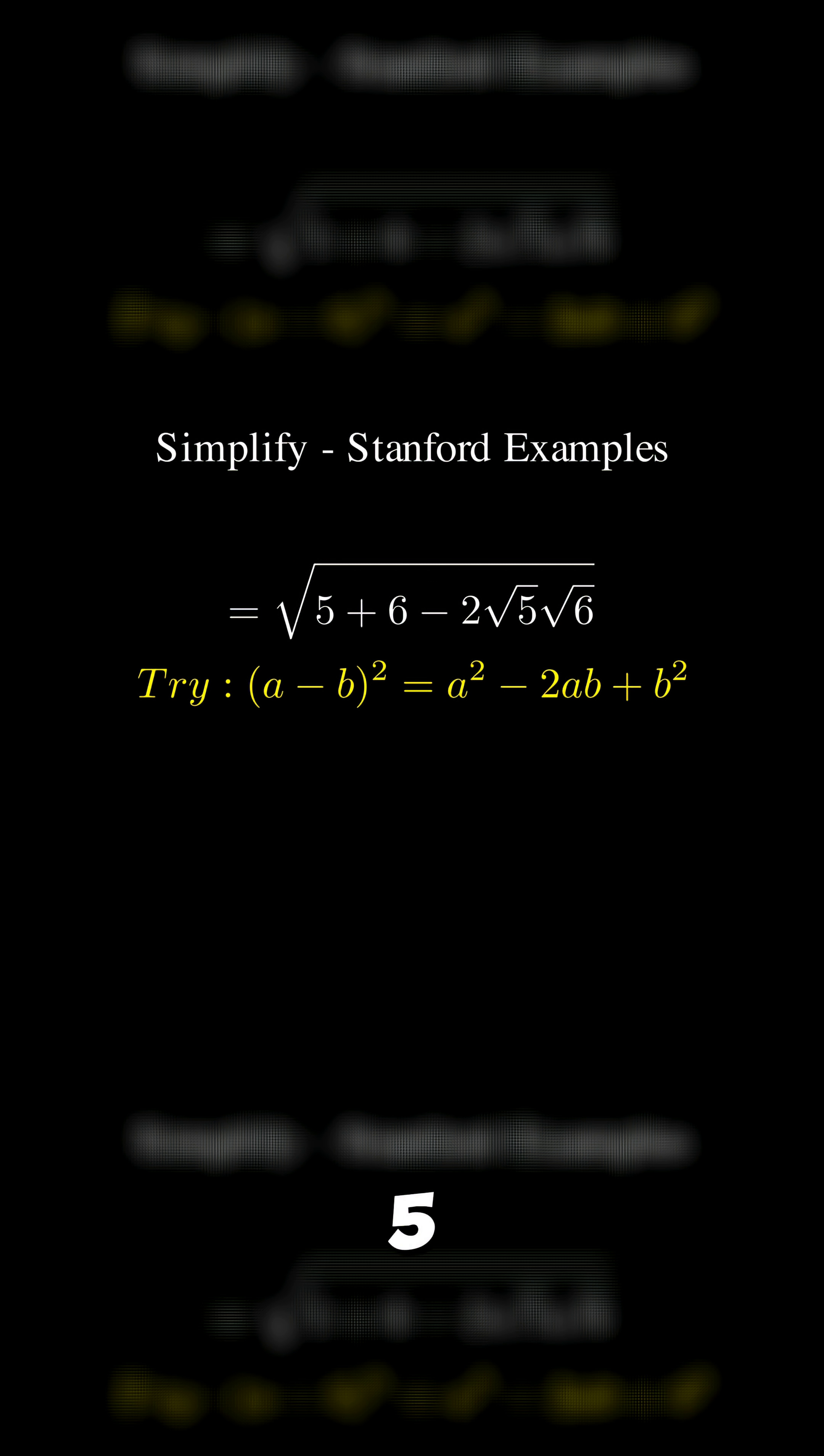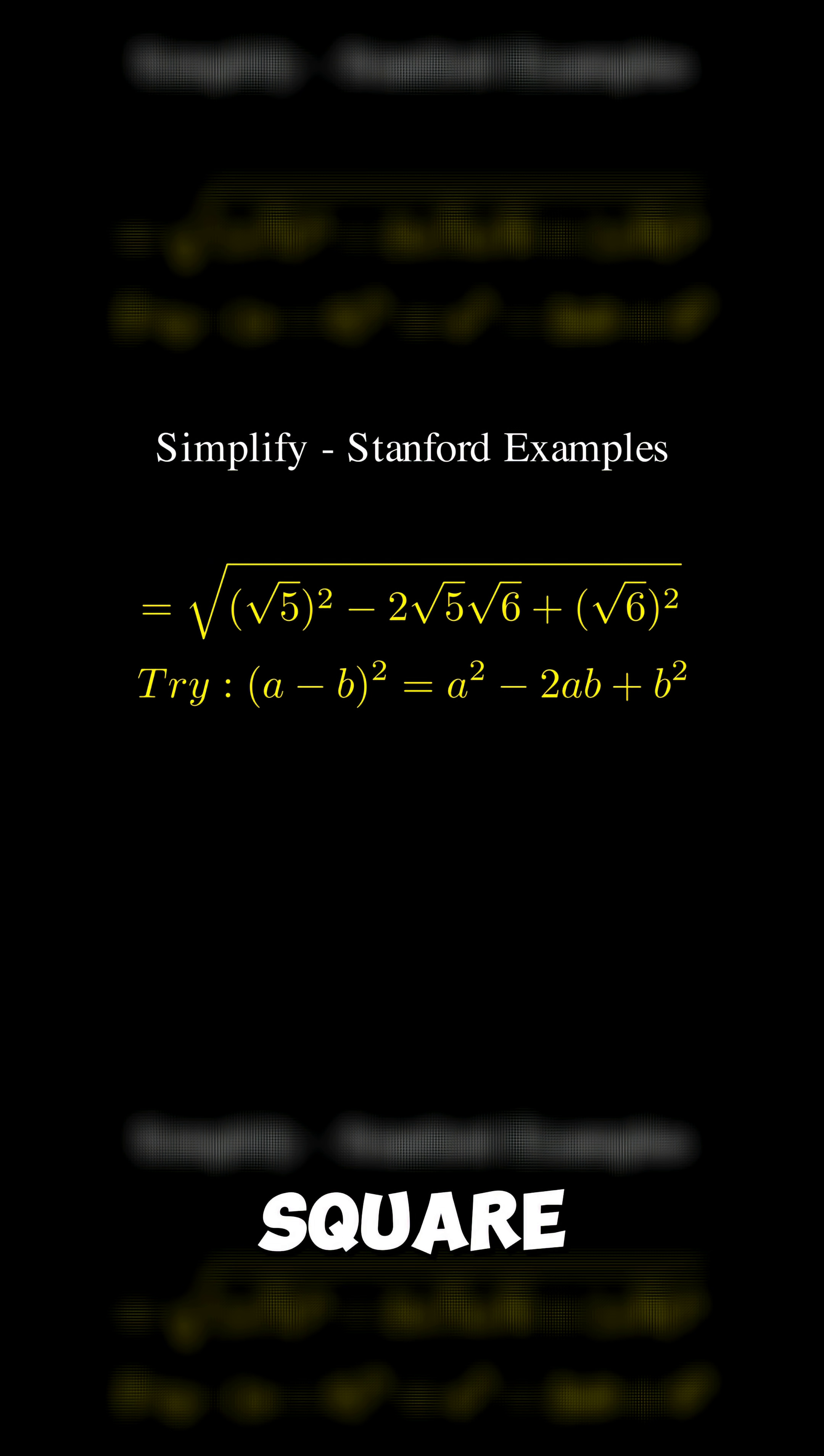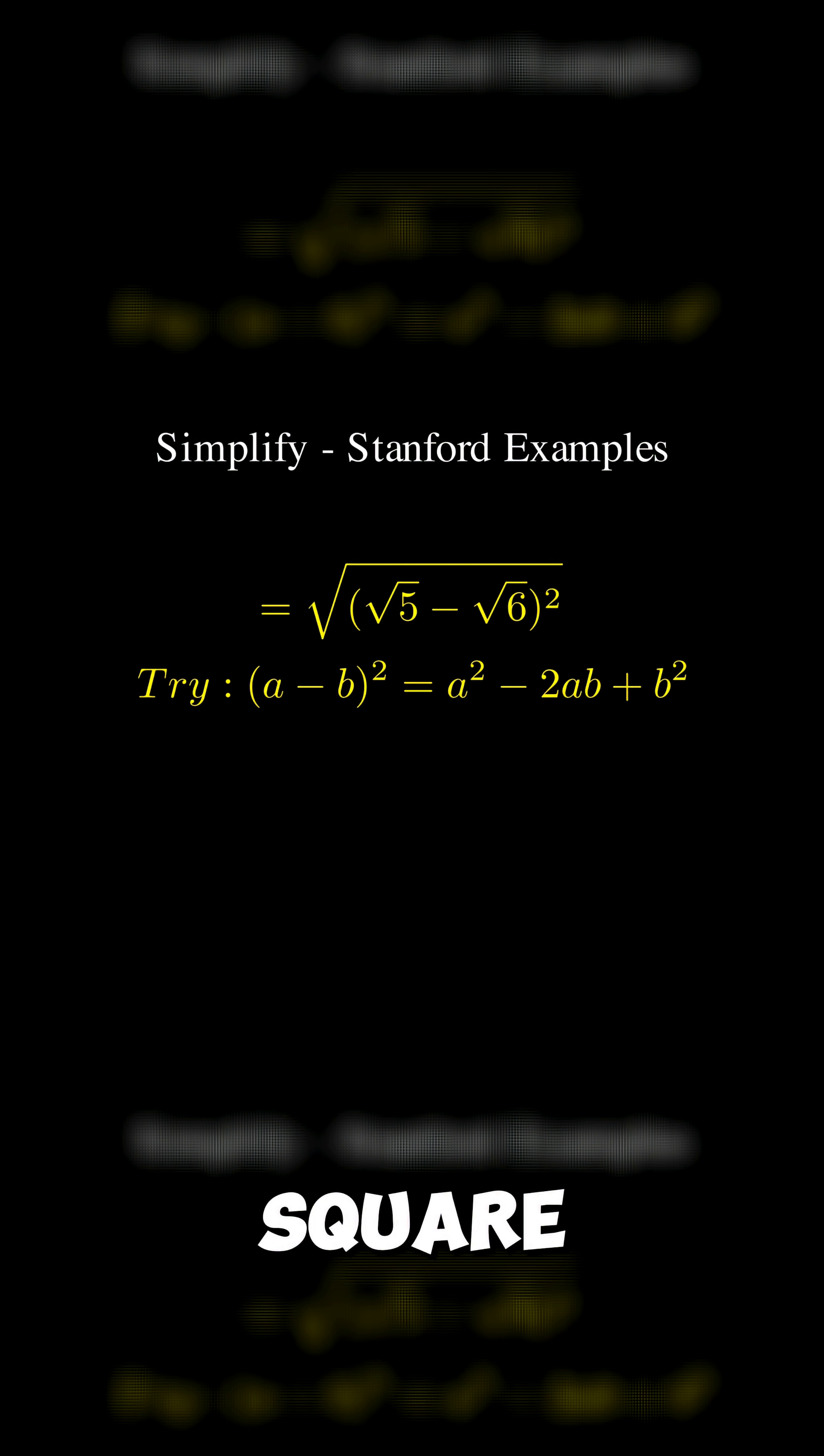Now we write 5 and 6 as square root 5 to the power of 2 and square root 6 to the power of 2. This is because the square root cancels the square, which helps us match the formula and spot the perfect square.